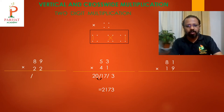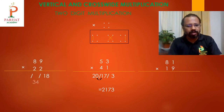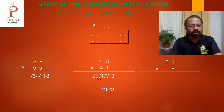Next, 89 times 22. Again we make three columns. Last column: 9 times 2 is 18. Middle cross-connect: 9 times 2 is 18, and 8 times 2 is 16, so 18 plus 16 is 34. First column: 8 times 2 is 16.